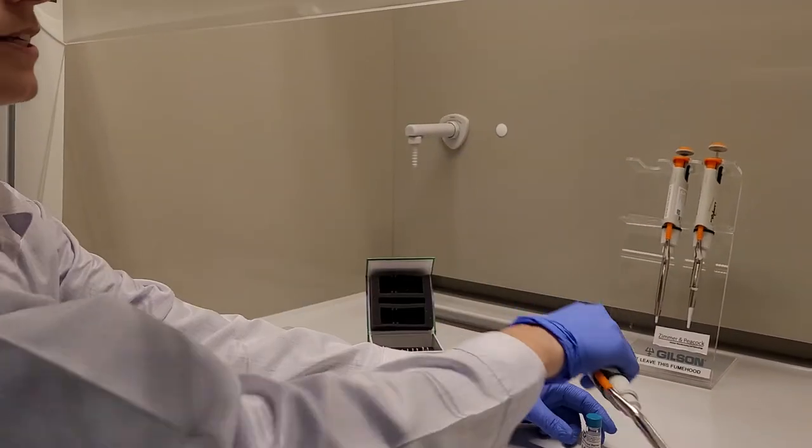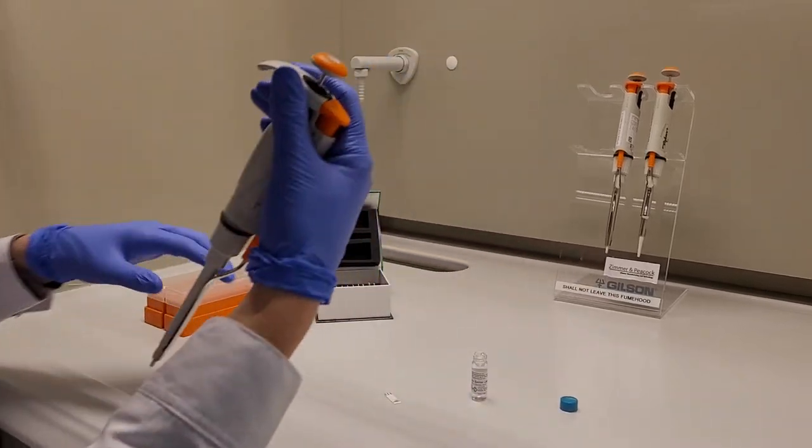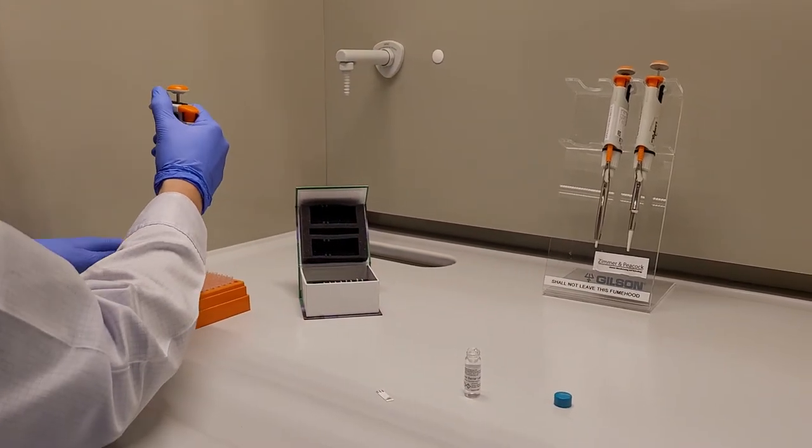We'll pipette 0.6 microliter onto the working electrode and so we'll set our pipette to that.